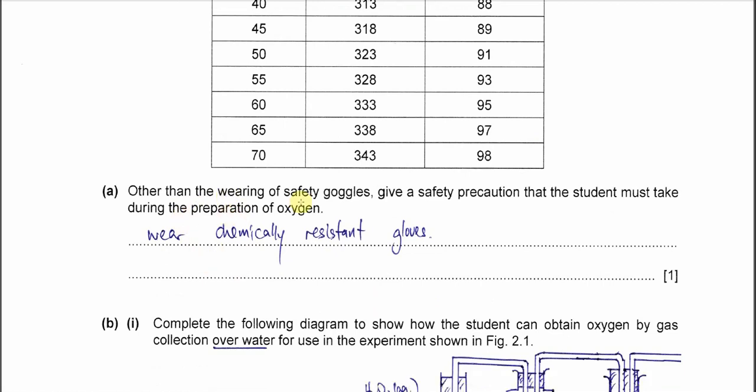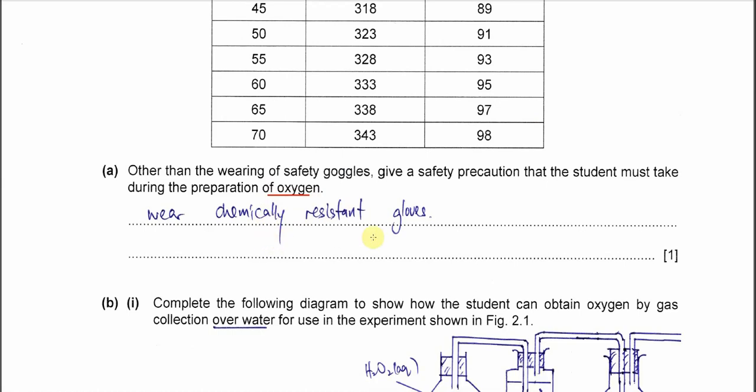Other than wearing safety goggles, give a safety precaution the student must take during the preparation of oxygen. H2O2 is corrosive, so we need to make sure we wear gloves. Nowadays, you must add 'chemically resistant' because it says corrosive—you cannot just wear normal gloves. The gloves must be able to resist corrosion. Wear chemical resistant gloves.